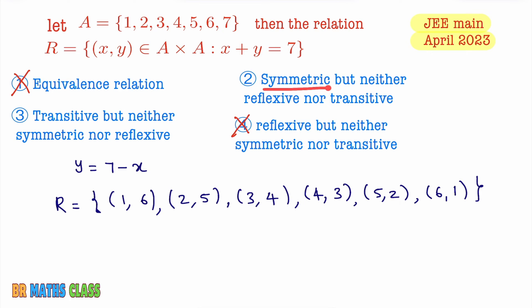Now you see second option they are saying it is symmetric. You take (1,6). For ordered pair (1,6), (6,1) is there in this. Yes, (6,1) is there. For ordered pair (2,5), (5,2) is there in this. Yes, (5,2) is there. For ordered pair (3,4), (4,3) is there in this. Yes it is there. So for (4,3), (3,4). For (5,2), (2,5). For (6,1), (1,6). It can be easily understood that this relation is symmetric.